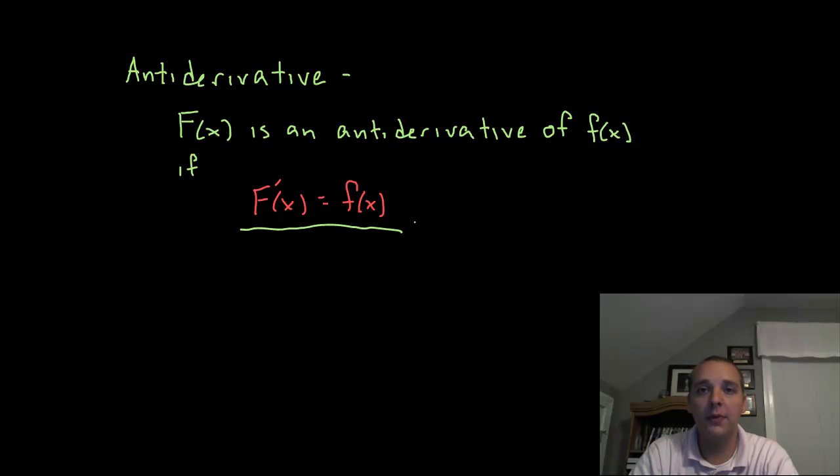The formal definition is we would say that capital F of x is an antiderivative of little f if when you differentiate capital F of x it would give you little f of x. That phrasing could be a little confusing but let me give you an example and it should make this sentence a bit more clear.